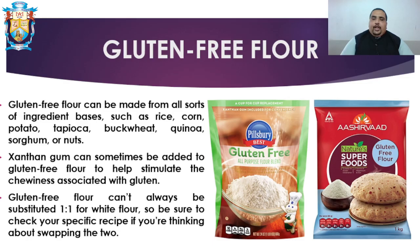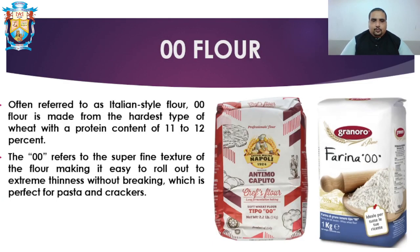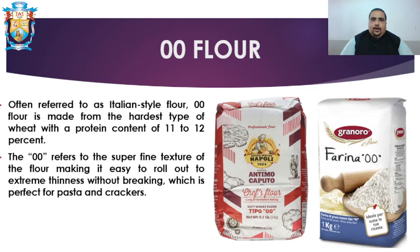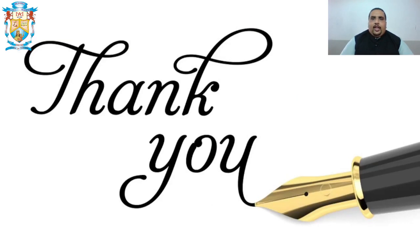Finally, there is double zero flour — or 00 flour — often referred to as Italian-style flour. It is made from the hardest type of wheat with a protein content of 11 to 12 percent. The double zero refers to the super fine texture of the flour, making it easy to roll out to extreme thinness without breaking, which is perfect for pasta and cakes. These were all the different types of flour available in the market for manufacturing different sorts of baked goods. Thank you very much.